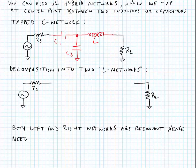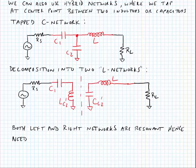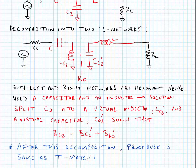Much like the T network, we do a decomposition into two L networks. On each side we need an R, L, and C to form resonant circuits. In this case we make a virtual inductor LC2 prime and a virtual capacitor CC2 prime by splitting C2 into these two components. The rule is that the sum of the susceptances BC2 equals BC2 prime plus BL2 prime.